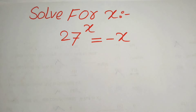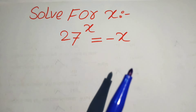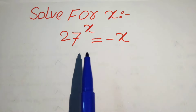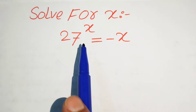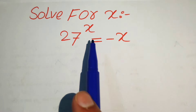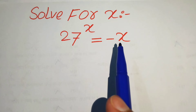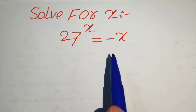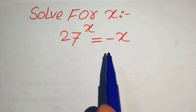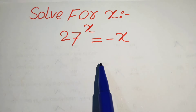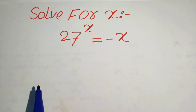Hi everyone, welcome. We solve this nice math algebra problem where we have 27 to the power of x equals minus x, and we solve this problem for the values of x.